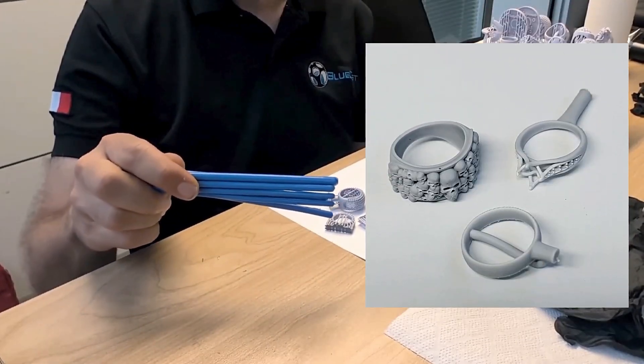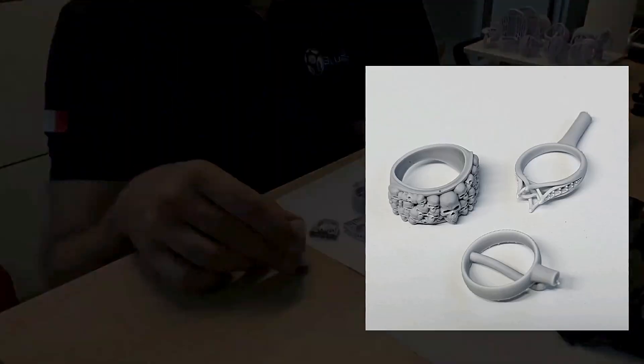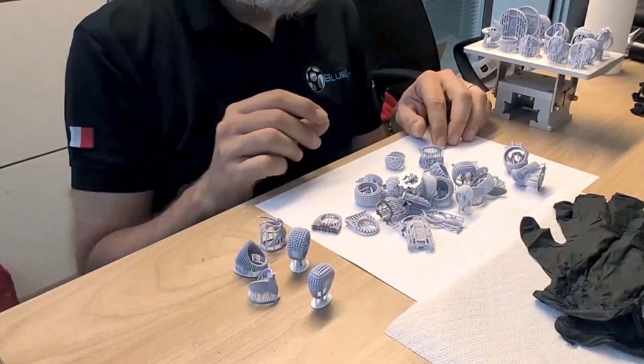In this video we will use different types of models. Some will not have a sprue, others will have a partial solution, and some will have all injection channels printed directly in 3D.